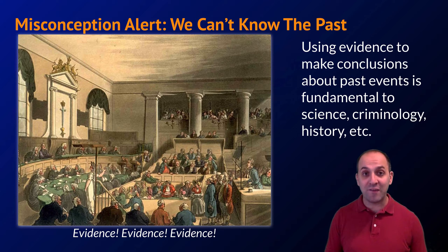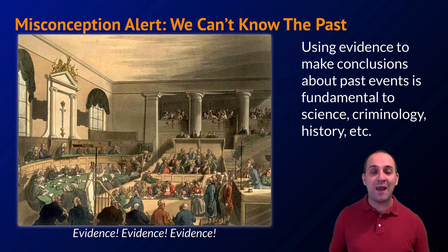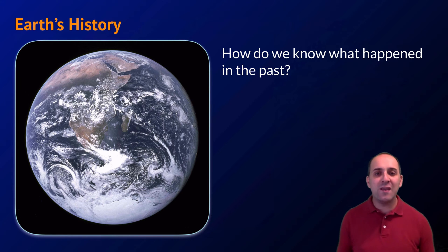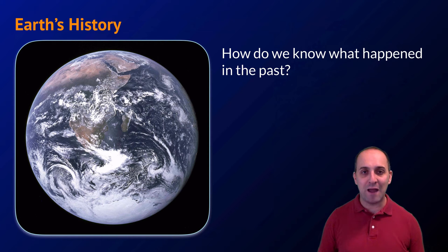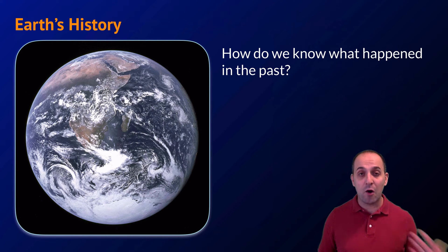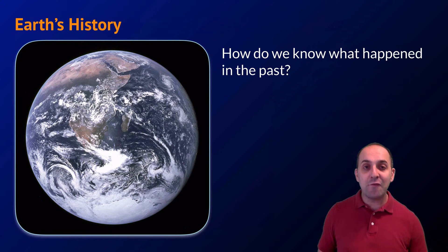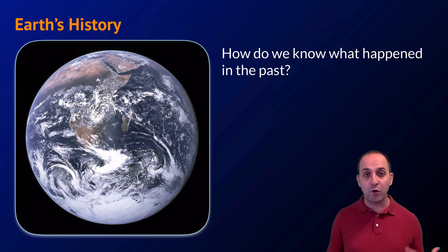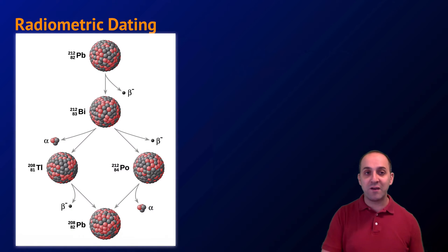Just because we were not present to see something happen does not mean that that thing did not happen. That out of the way, let's talk a little bit about Earth's deep history. There are many different ways that people collect evidence about what has happened in Earth's history, and many different ways of dating geological events. I'm only going to focus on one methodology, which is radiometric dating.